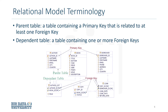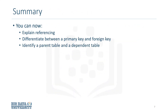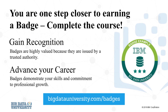In the example, the author list entity has foreign keys that refer to different parent tables: author and book. With this overview, you can now explain referencing, differentiate between a primary key and foreign key, and identify a parent table and a dependent table. Thanks for watching this video.